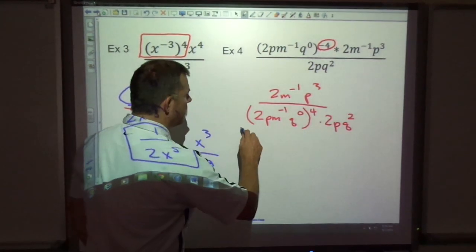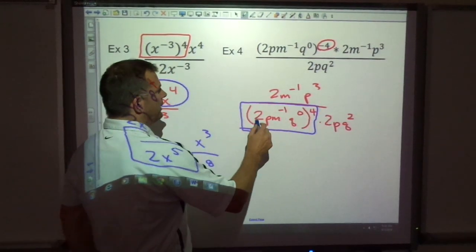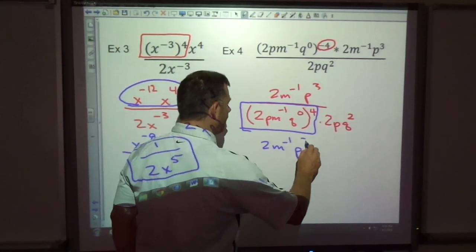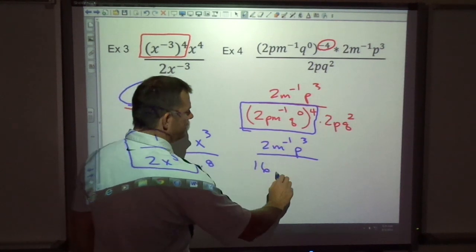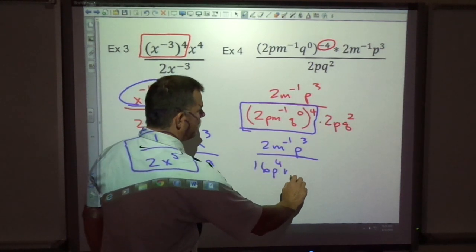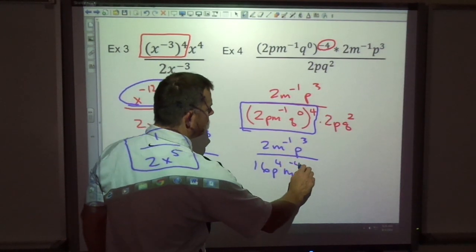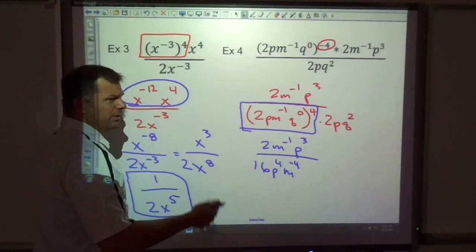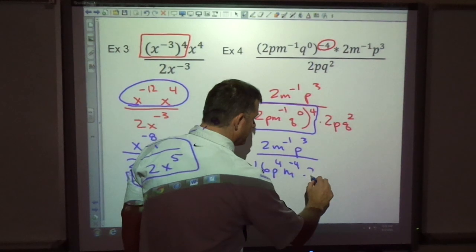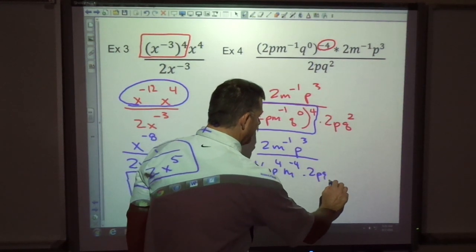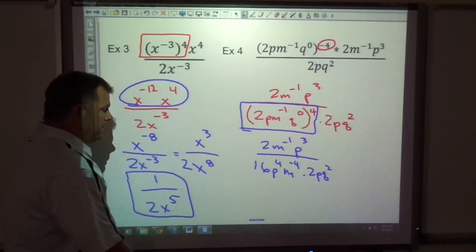Now I can do my power to power, just like before. The top is going to stay the same. The bottom, I've got 2 to the 4th, which is 16. P to the 4th, m to the negative 4th, q to the 0 times 4 is 0. So I don't even really need to write the q. It's fine. It's just 1. It doesn't matter if I write it.